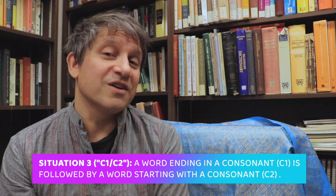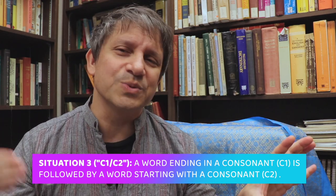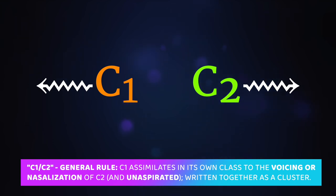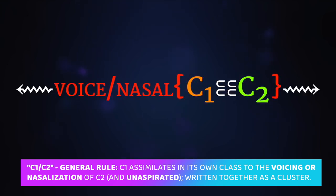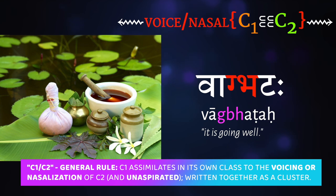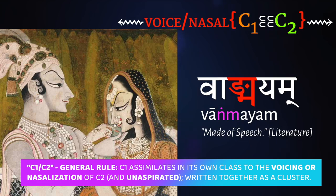Now for the most intricate situation: when a word ends in C1 and is followed by another word starting with C2. The general rule is that C1 assimilates within its own class to the same voicing or nasalization that C2 has. So if we have vāk followed by bhaṭa, we get vāgbhaṭa — the ka becomes a ga, matching the voicing of the bha, but without gaining aspiration. If vāk is followed by maya, we get vāṅmaya, meaning literature — the ka-kara jumps to match the nasal status of the ma-kara by becoming the corresponding velar nasal.